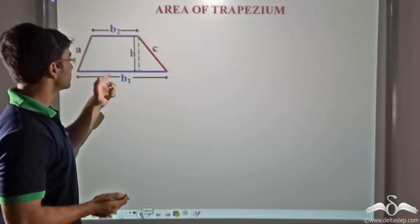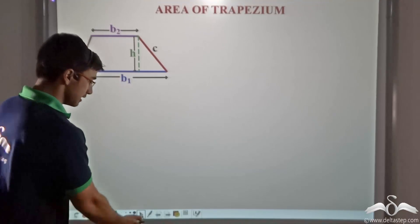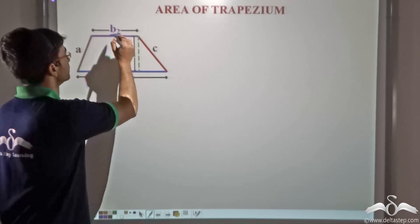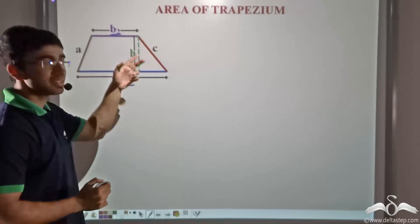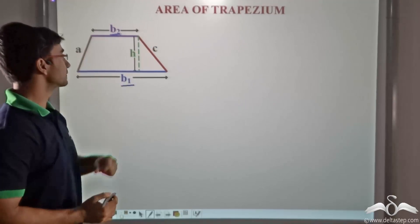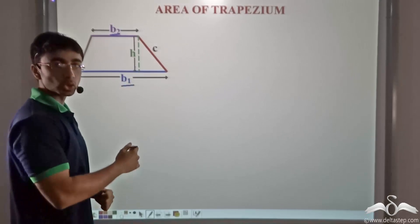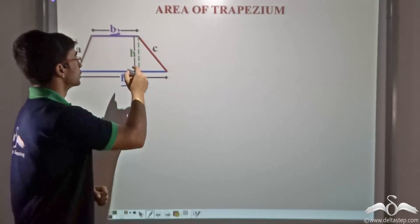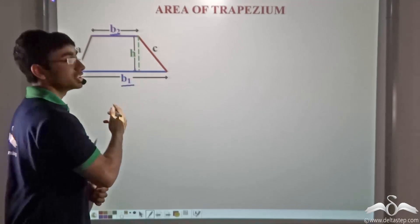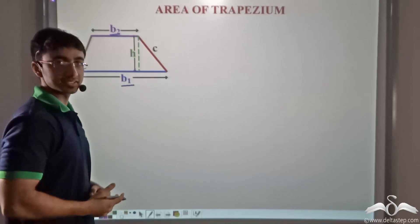The trapezium has a pair of parallel sides known as the bases, marked as B1 and B2, and the non-parallel sides or legs are A and C. The height of the trapezium has also been denoted — that is the distance between the two parallel sides.